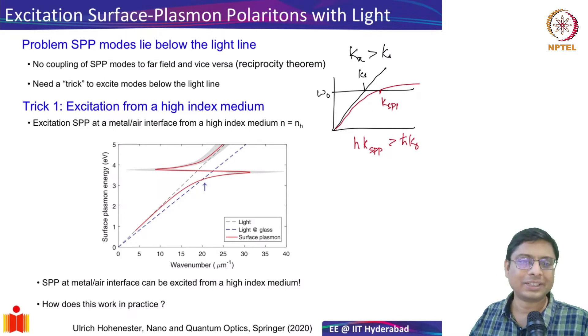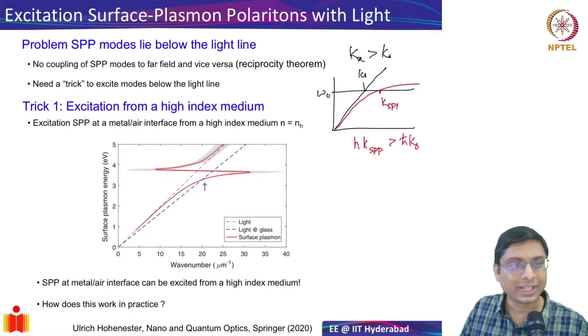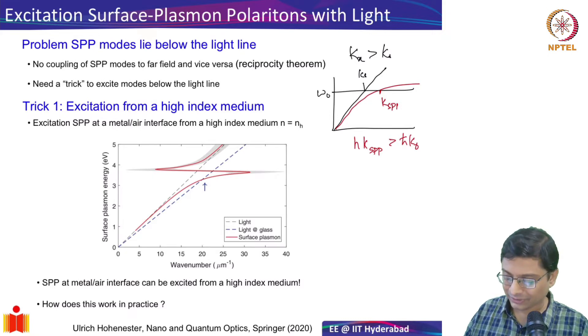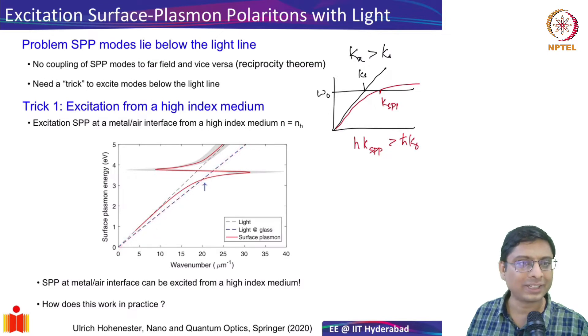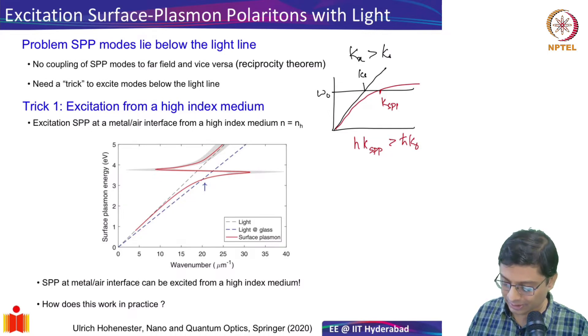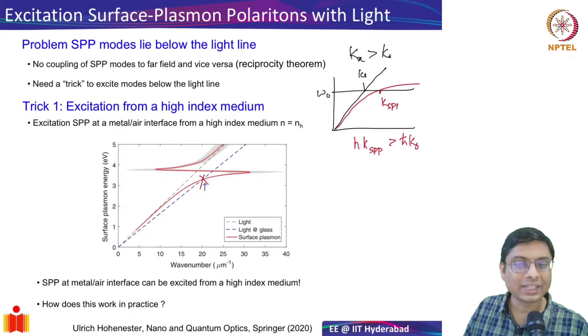We cannot directly excite a plasmon on a semi-infinite metal sheet and air interface. We have to play some trick. If I have air, this is my light line, but now if I come through a higher index medium, this is my light line. The slope reduces - refractive index increases and slope reduces. Now if I come through a higher index medium, there is an intersection of the light in the high index medium and my SPP. At that wavelength and frequency I can excite a plasmon polariton SPP.